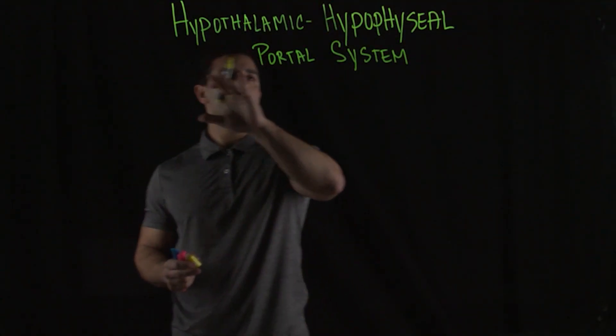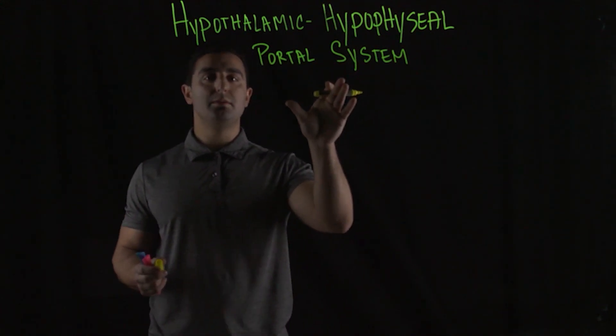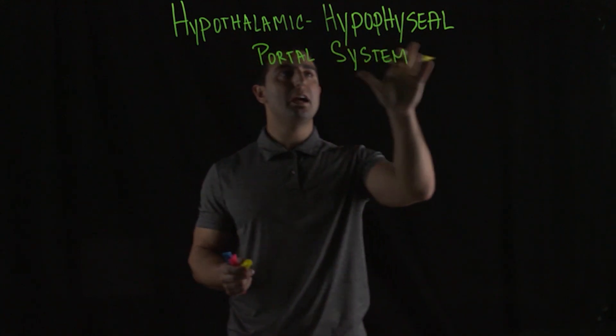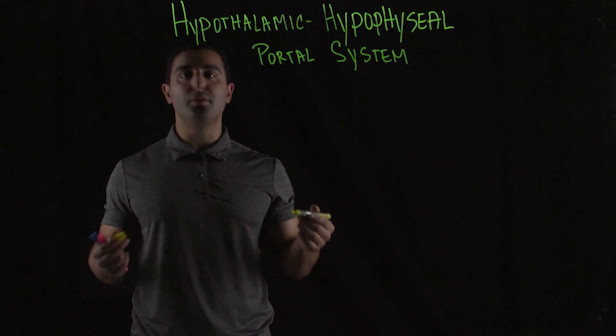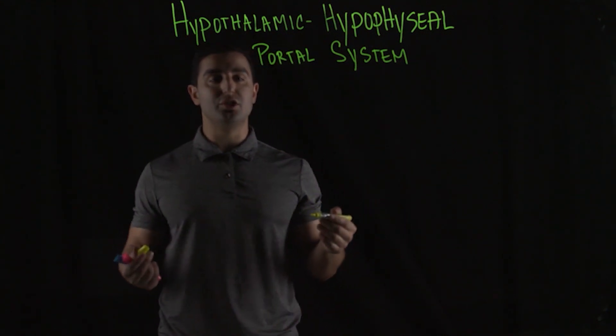One of the most important vessels that's generated in the nervous system and the circulatory system is this hypothalamic hypophyseal portal system. It's very important regarding transfer of hormones at a very high concentration to the target region.